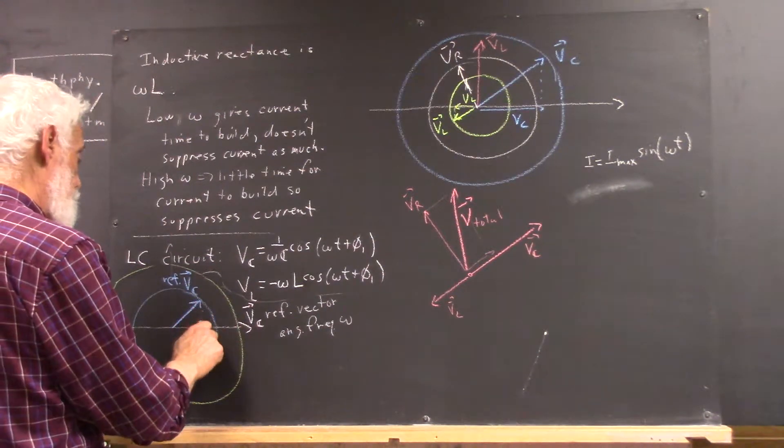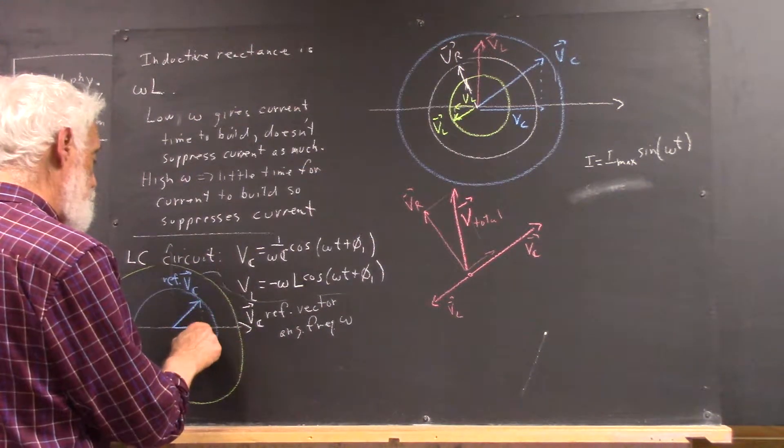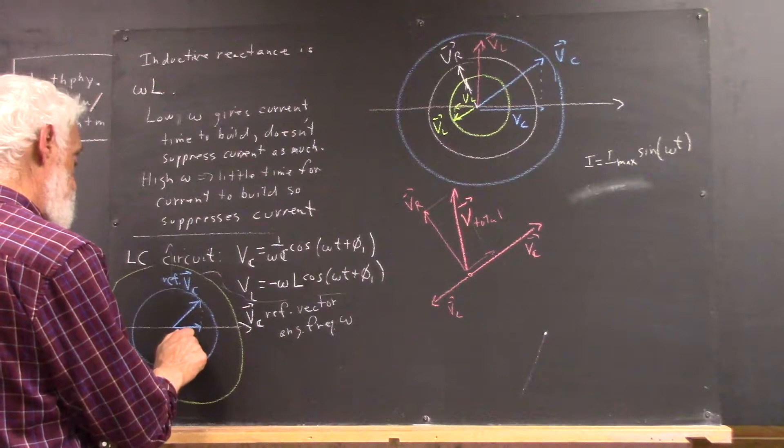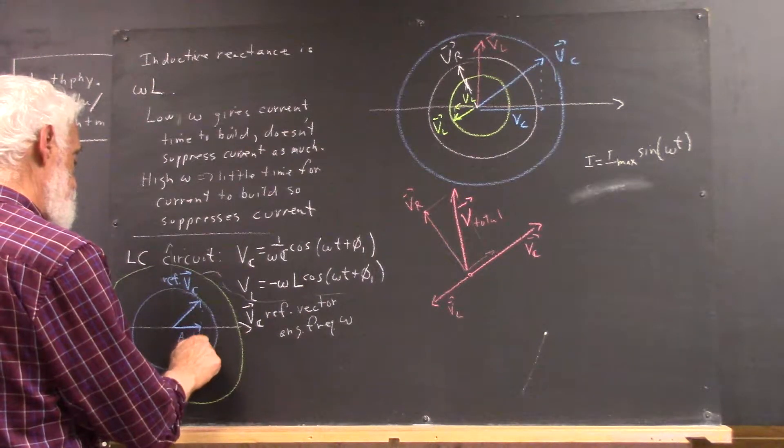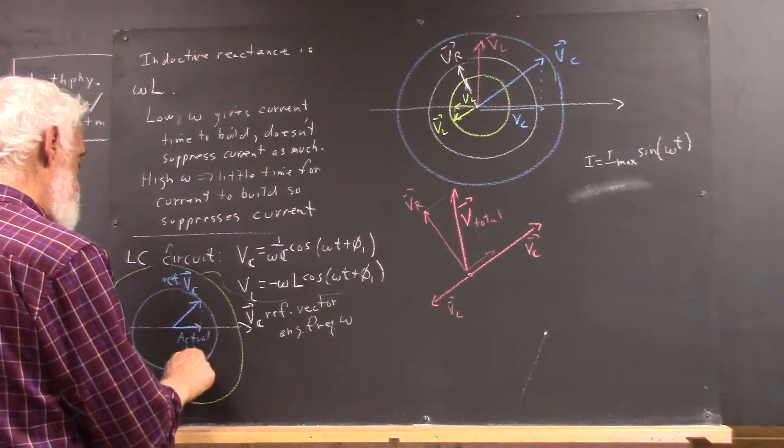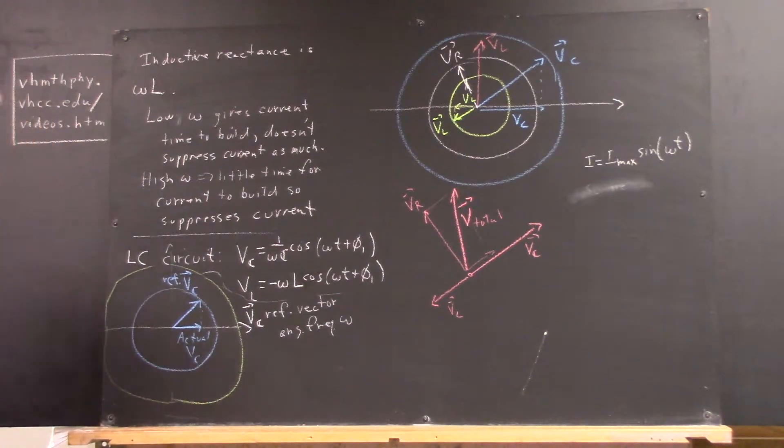And as this vector moves around the circle with angular velocity omega, it projects down here to the actual capacitor voltage.